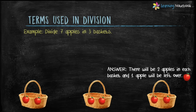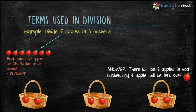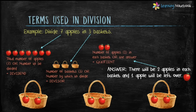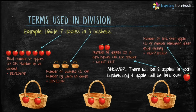Through this example, let's understand the terms used in division. The total number of apples, which is 7, or the number to be divided, is called the dividend. The number of baskets, which is 3, or the number by which to divide, is called the divisor. We have 2 apples in each basket — this is the answer, which we call the quotient. The one apple left that cannot be divided further is called the remainder. So students, the terms used in division are: dividend, divisor, quotient, and remainder.